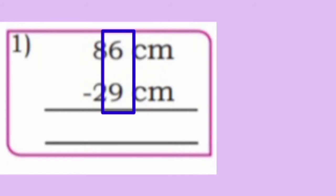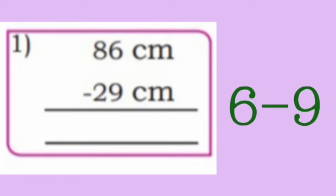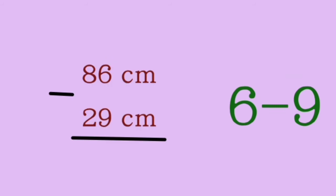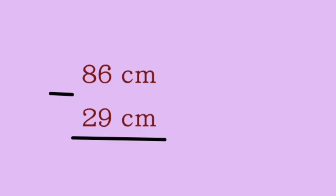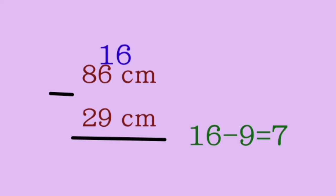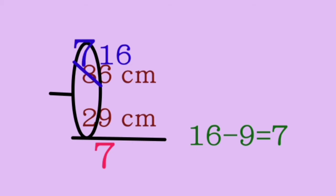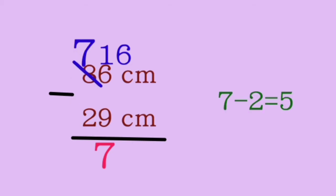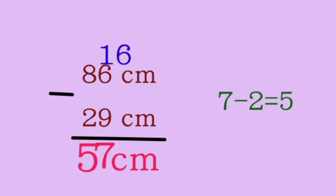Subtract unit place: 6 minus 9. We cannot subtract 9 from 6, so let us borrow 10 from 80. So 8 becomes 7 and 6 plus 10 becomes 16. 16 minus 9 is equal to 7. Now let us subtract the 10th place: 7 minus 2 is 5. The answer is 57 cm.